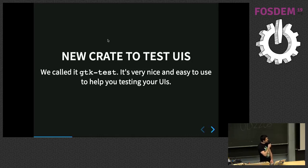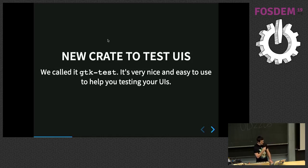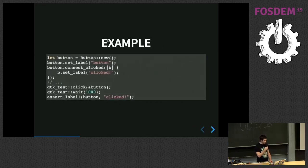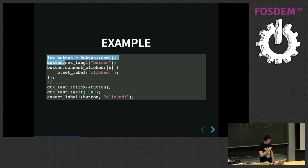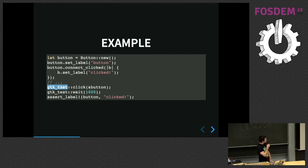Another big thing is a crate to test user interfaces, because we never say it enough — testing is good. We call it gtk-test and it's pretty easy to use. It was started by Anthony and was originally used to test GNOME RAM. We improved and modified it to work with gtk-rs as well. Here you can see we create a button with a label, and when you click the button, the label switches to 'clicked'.